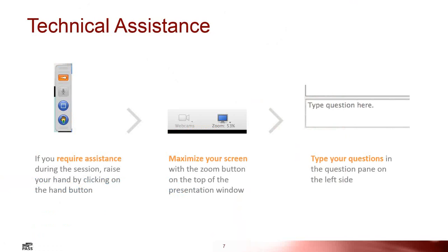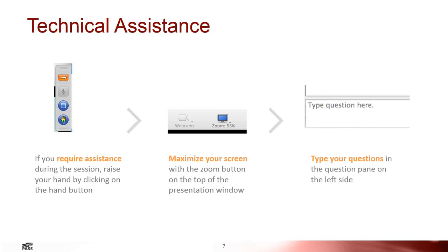For technical assistance, just a couple housekeeping items real quick. If you're having any issues, just raise your hand and use the hand icon on the right side of your screen and someone will assist you. To maximize your screen, use the Zoom button located on the top of the presentation window. Feel free to enter your questions in the Q&A field at any time. The question pane is also located on the right side of your screen. Since all the attendees are muted, you will need to submit your questions by typing in the Q&A field.